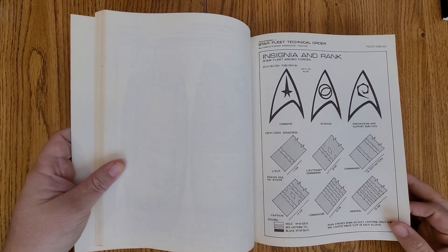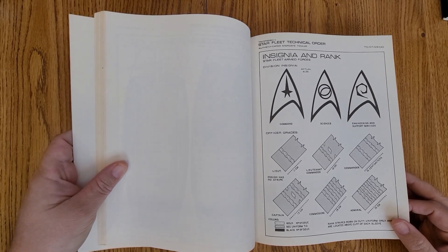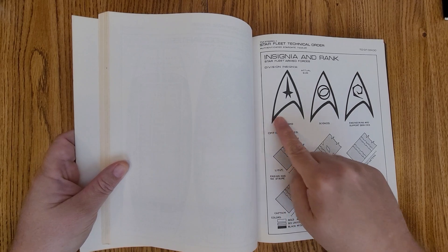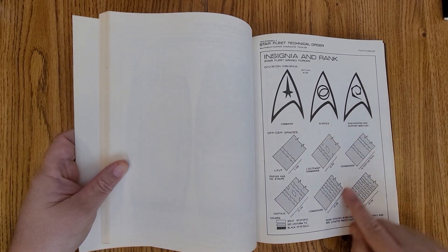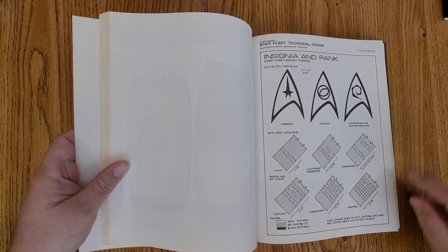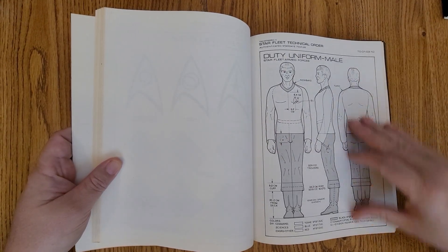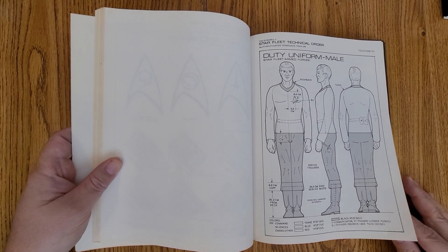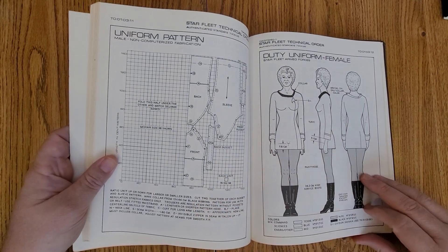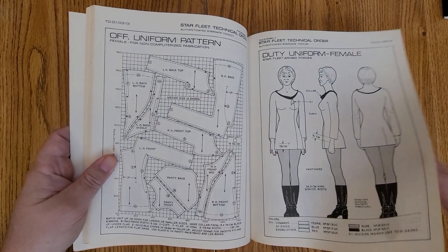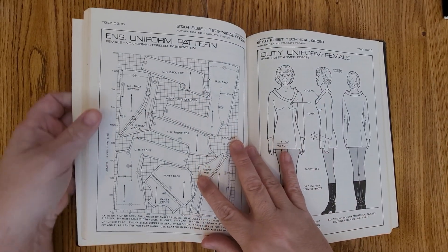For those of you that do your costumes, it actually talks about it. And here you can see from the original series, the command, the science, the engineering, you can see your rank, how it's on their sleeves. How the dimensions of the duty uniforms were for both male and then female. And you can see some really great representations at a lot of the conventions.